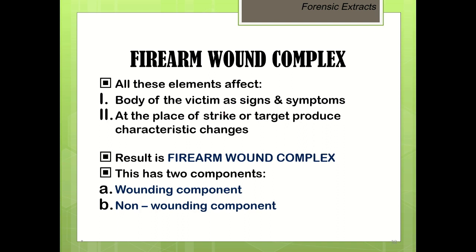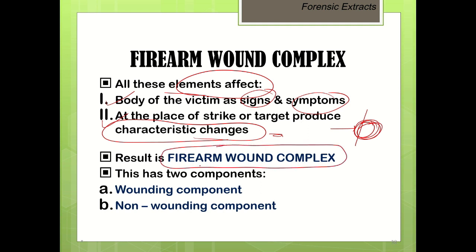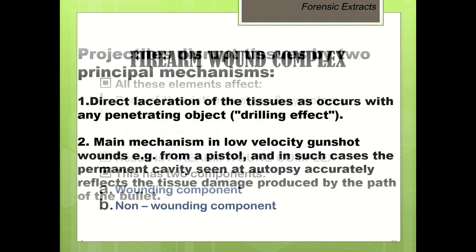So what is firearm wound complex? Basically, if a bullet hits any victim, the body of the victim shows signs and symptoms, and at the place of strike or target, some characteristic changes are produced. This hitting of the bullet, production of signs and symptoms, and changes in target tissues is known as firearm wound complex. It has two components: wounding components and non-wounding components.